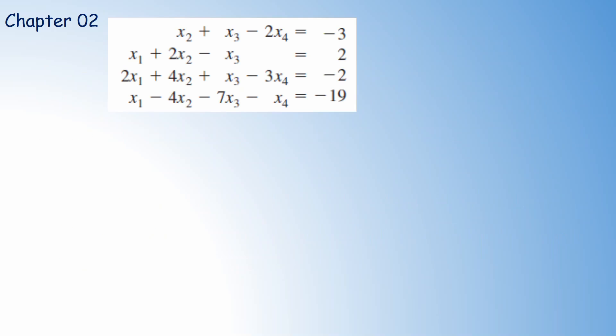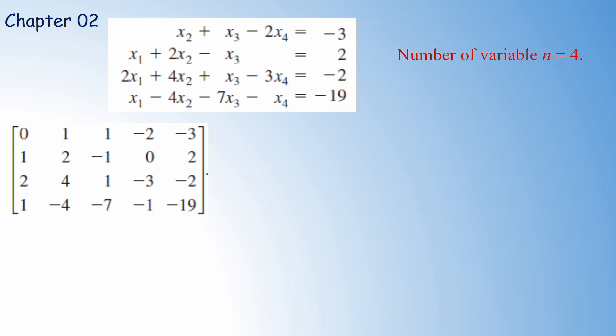We will see this example. Suppose we want to solve this linear system — we consider the corresponding augmented matrix. The number of variables is x1, x2, x3, x4 — there are 4 variables. If the system has a unique solution, the augmented matrix when converted to row echelon form should contain 4 non-zero rows. This is our augmented matrix.